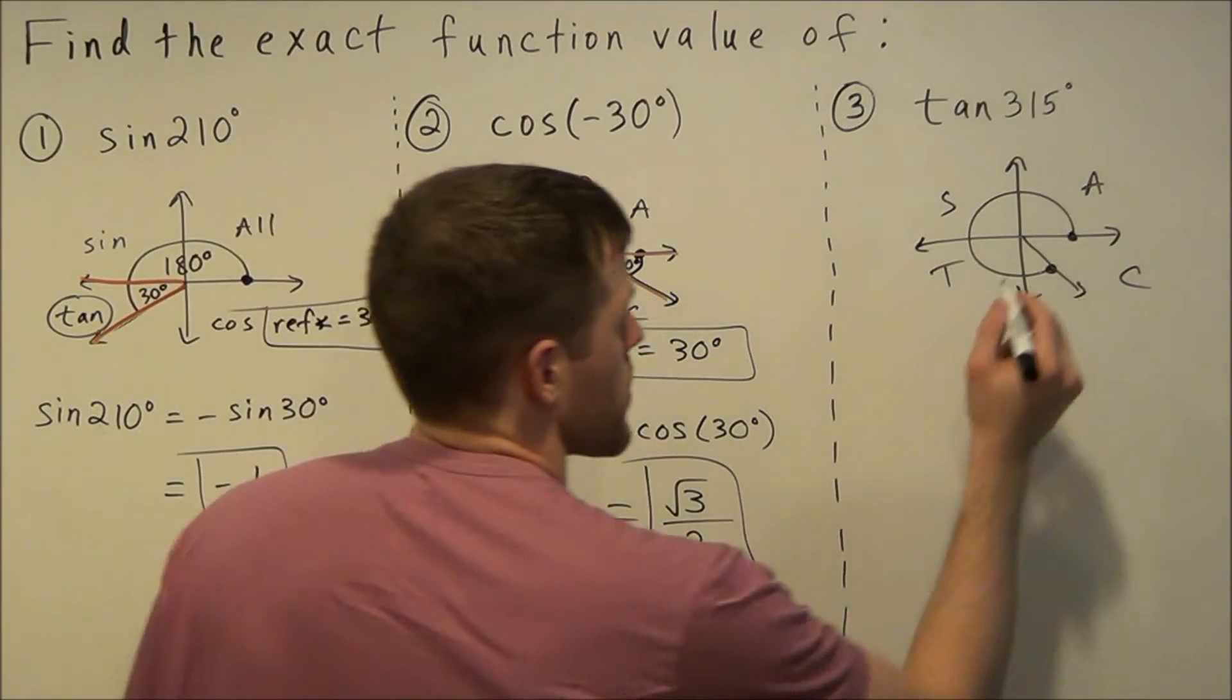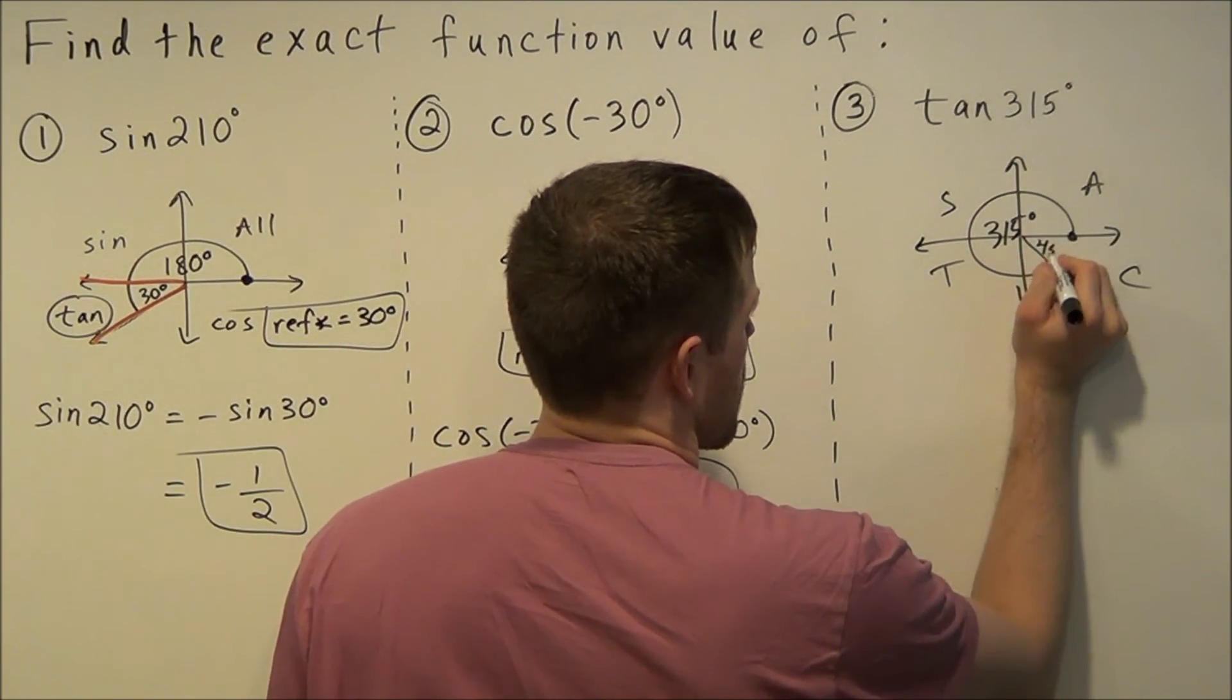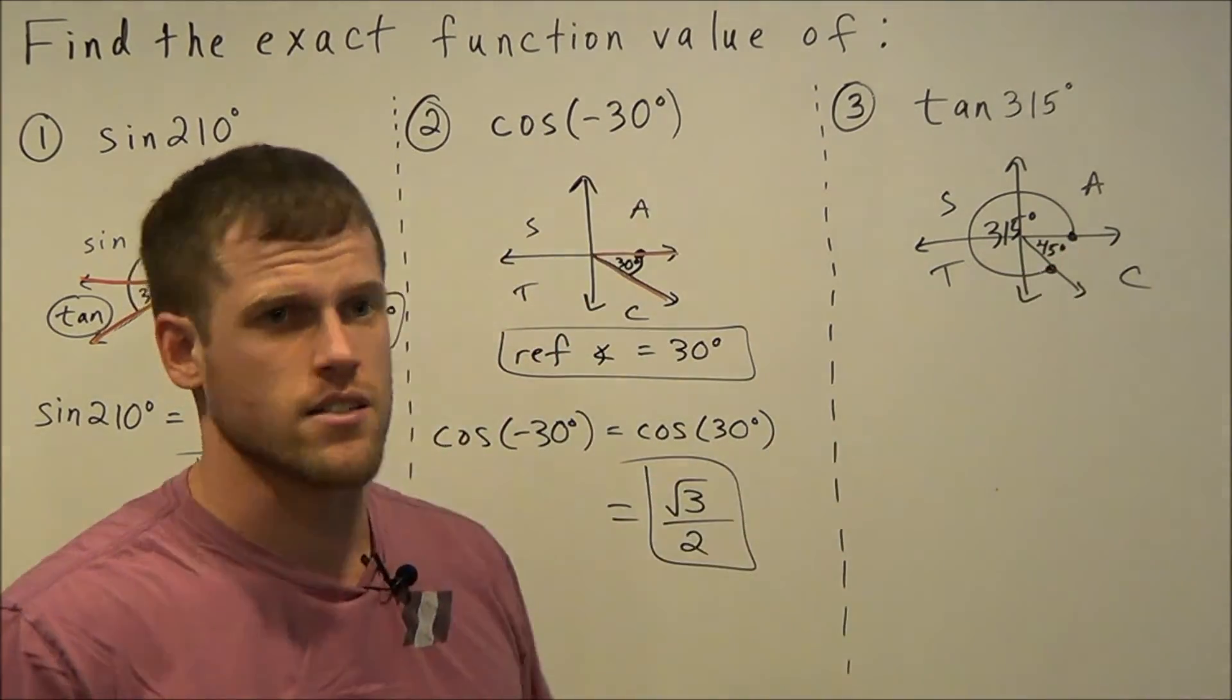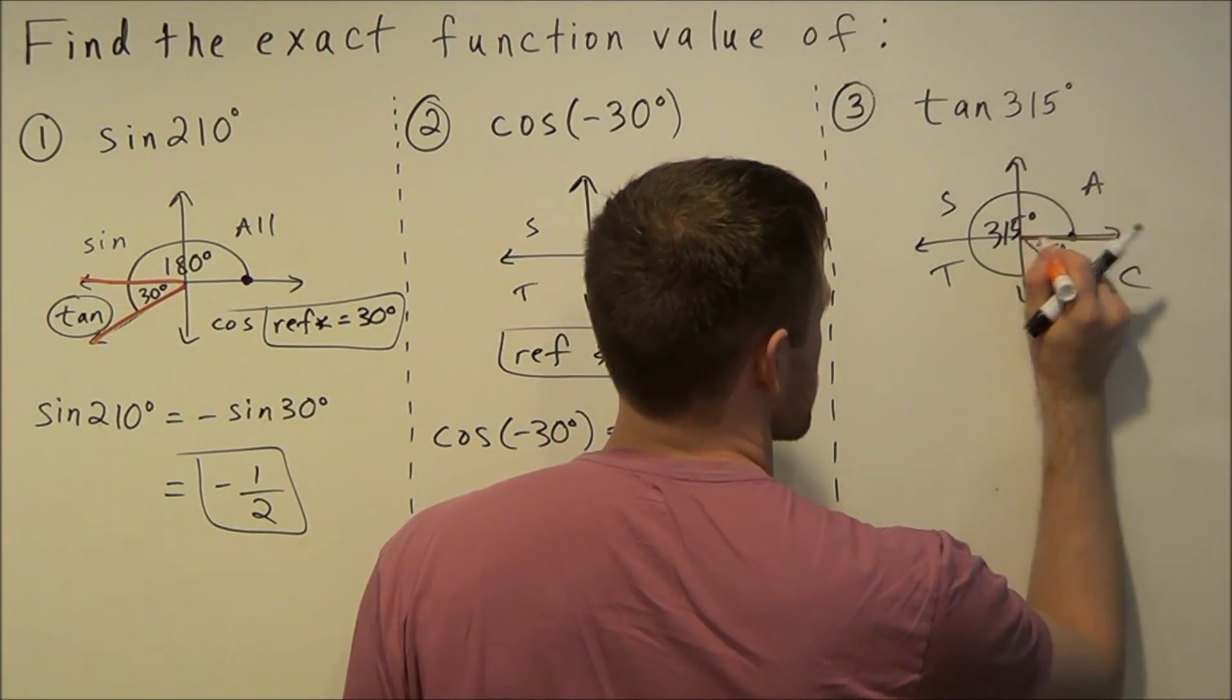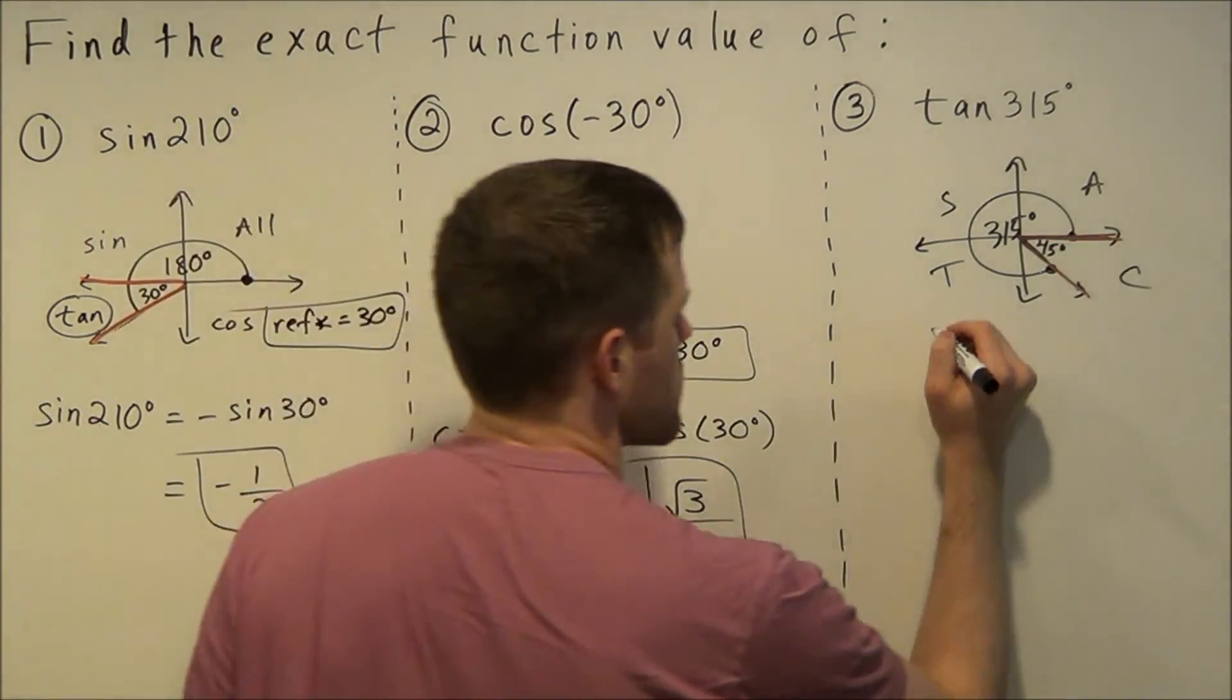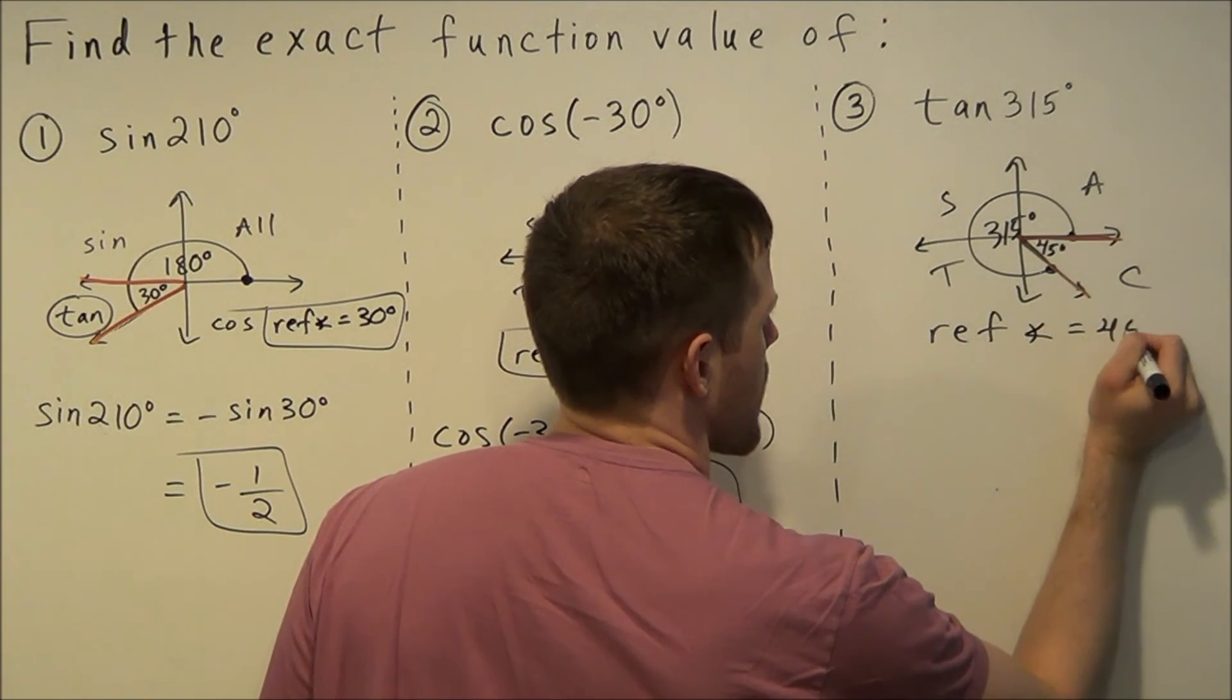To work this out, we identify if this whole angle is 315 degrees, the positive acute angle here between the terminal side and the x-axis is 45 degrees and this is our reference angle here. So we can write it out, we have a reference angle of 45 degrees.